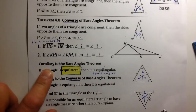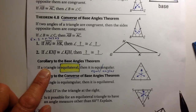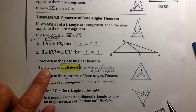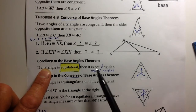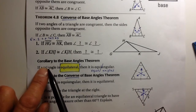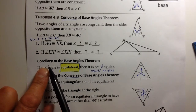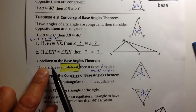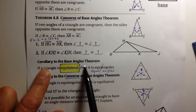A corollary — remember, a corollary is a true statement that is easily proven from a theorem. So once you establish a particular theorem, a corollary is something easily proven based on that previous theorem.